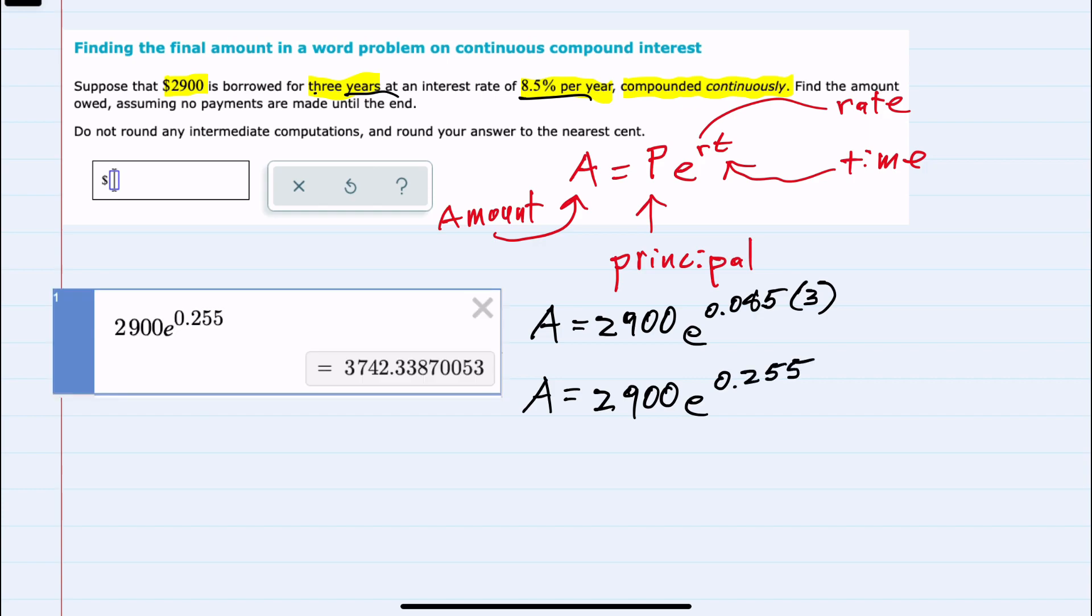And then using a calculator such as Desmos, I can get my decimal approximation. We are rounding to the nearest cent, which would be the second three. Looking behind that, I see an eight, so I will round up.